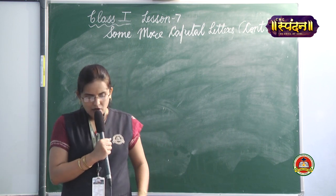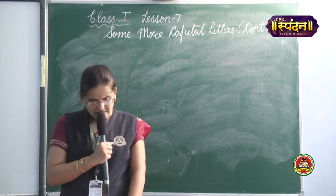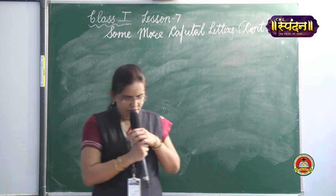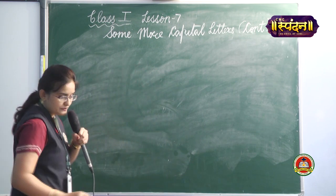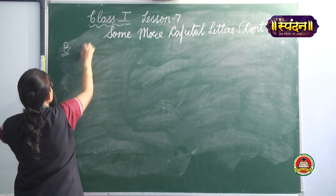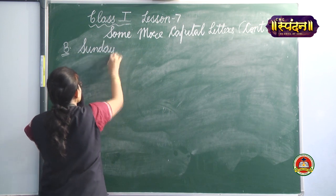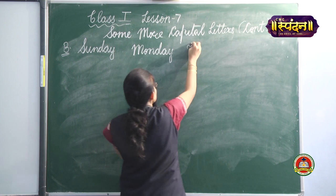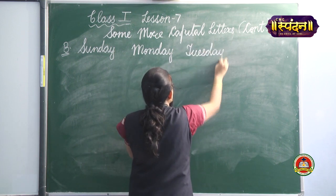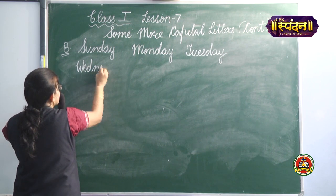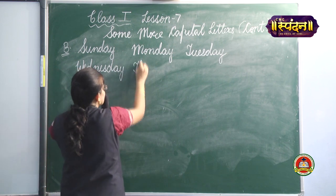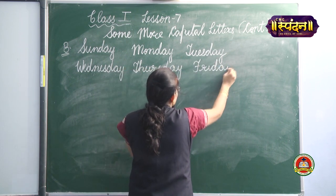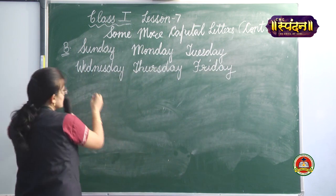Exercise B says: Write the names of the seven days of the week. Begin each day's name with a capital letter. We will start writing from Sunday. So: Sunday, Monday, Tuesday, Wednesday, Thursday, Friday, and the last one is Saturday.